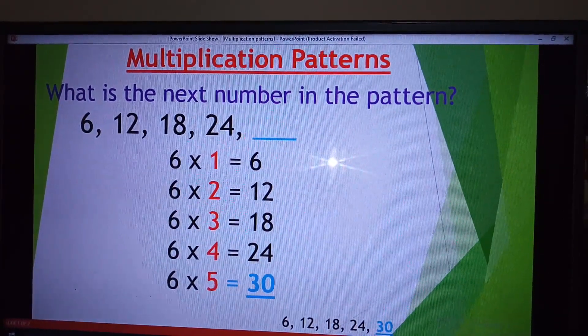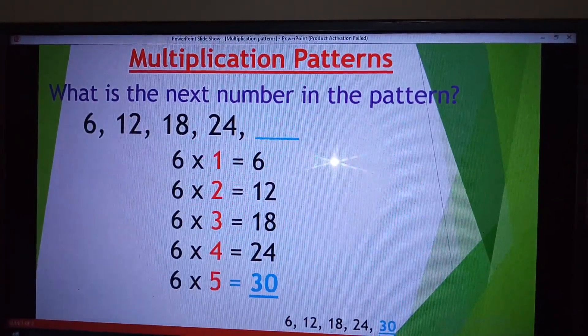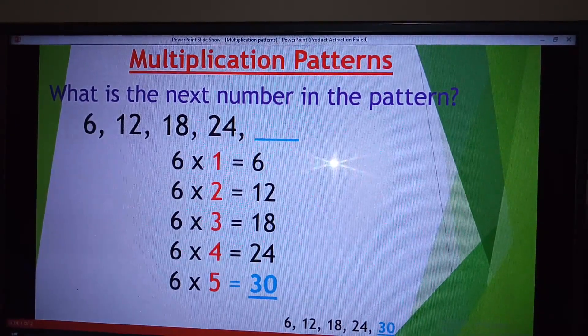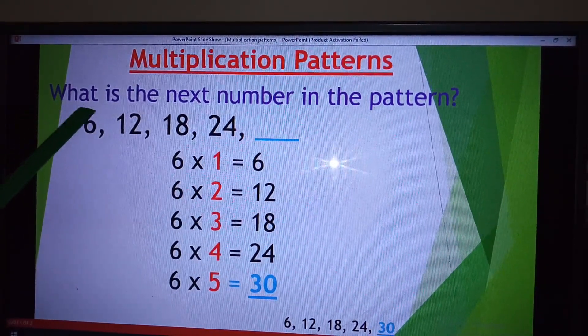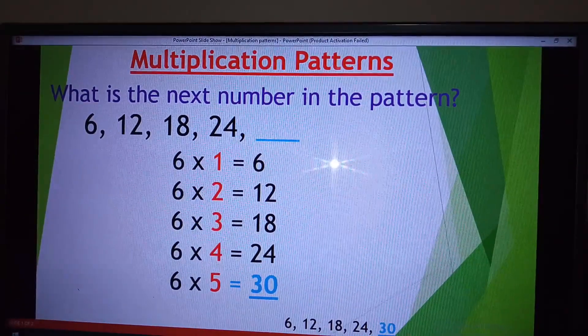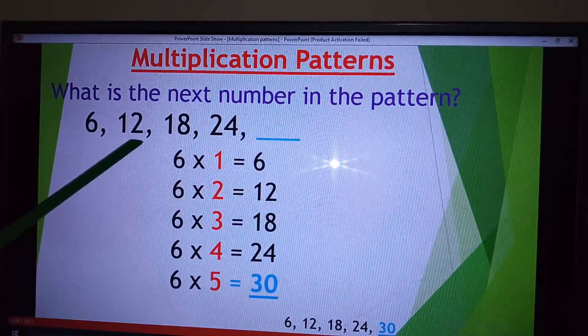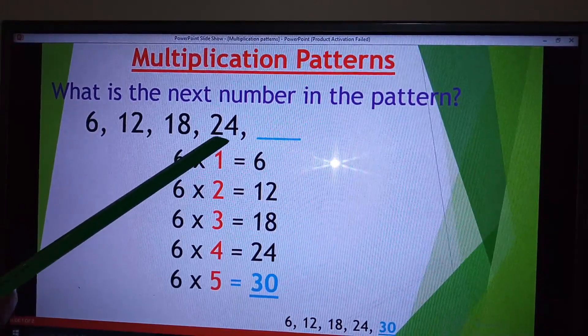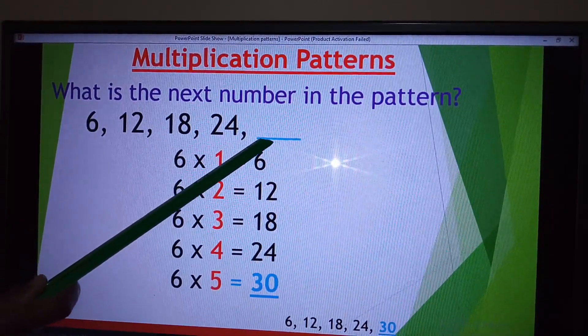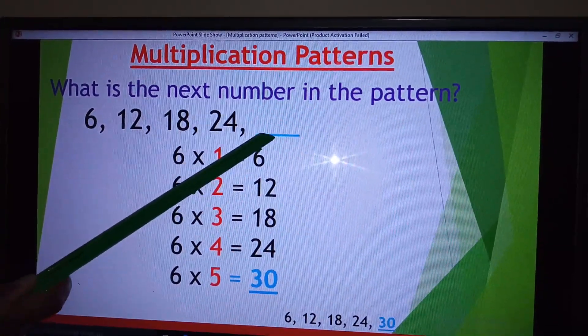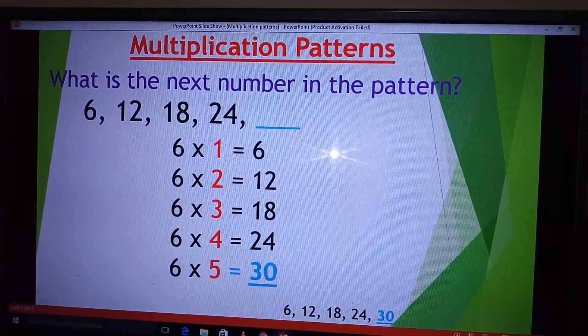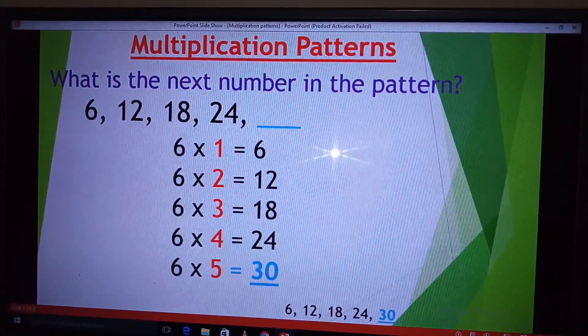Let's go straight to my first example. What is the next number in the pattern? A pattern consists of 6, 12, 18, 24. This dash means we need to identify the next number in this pattern.